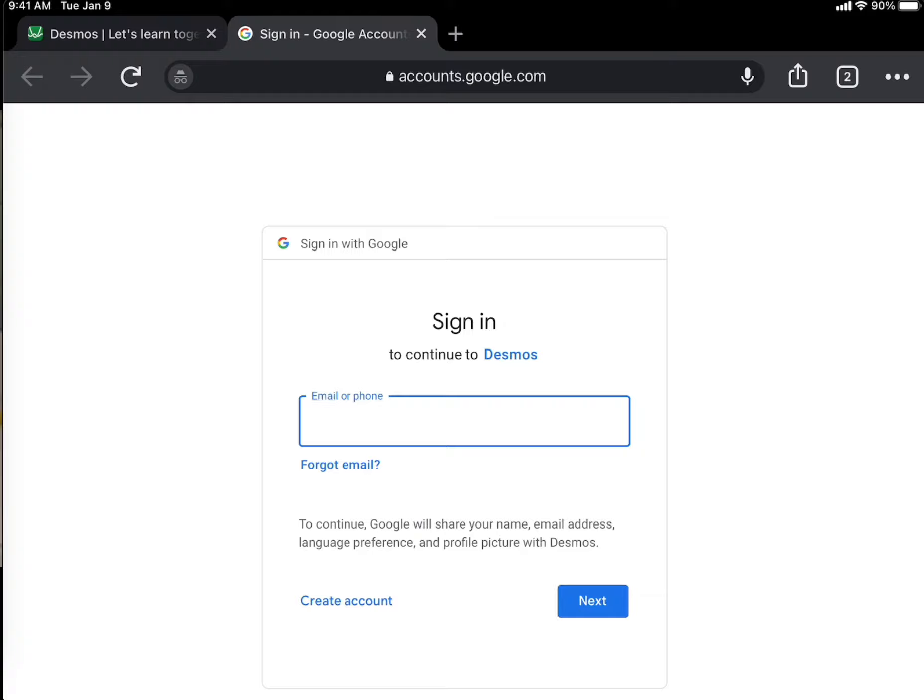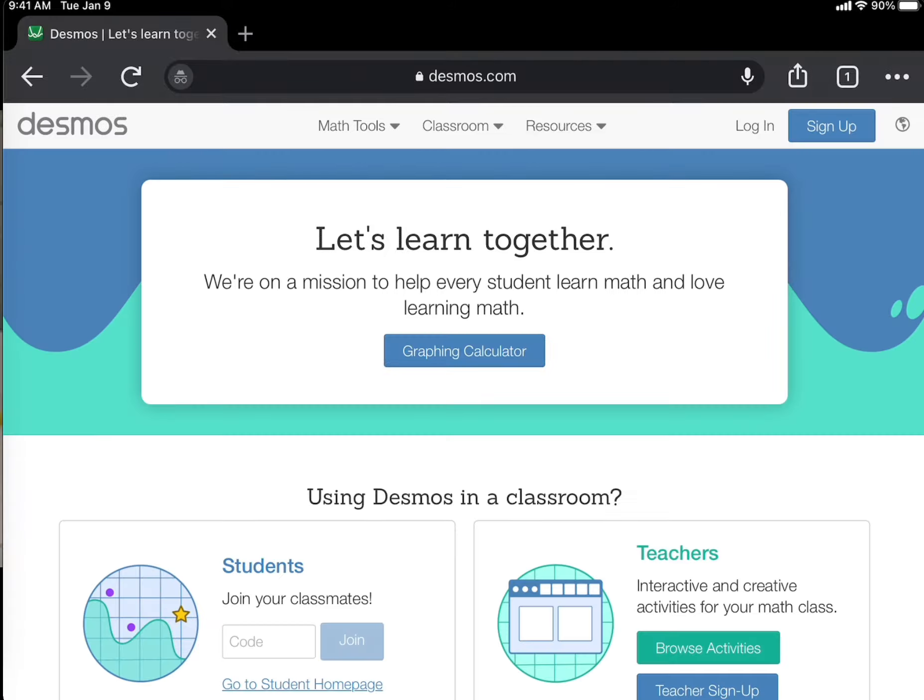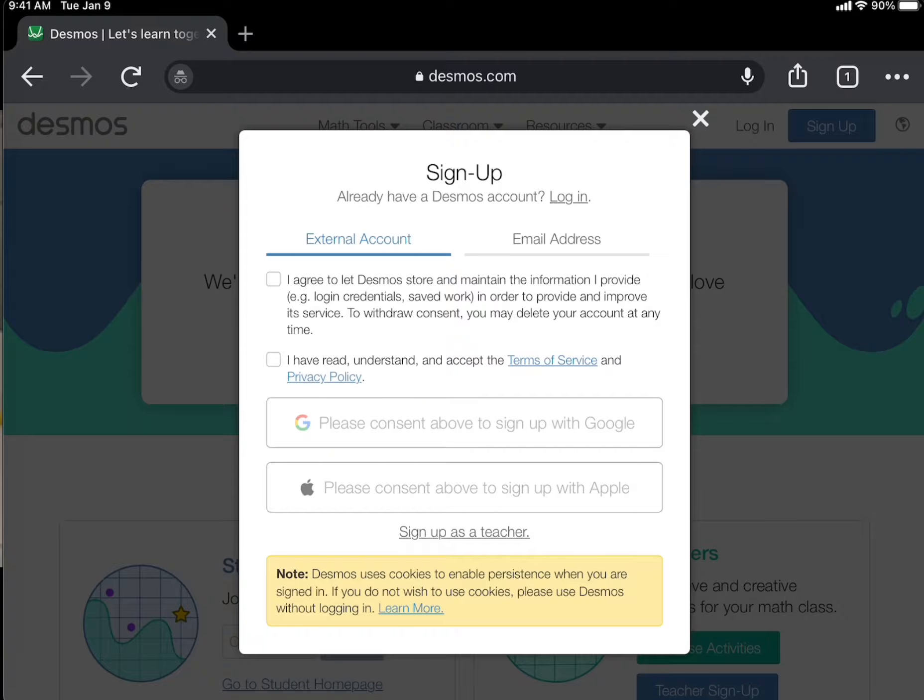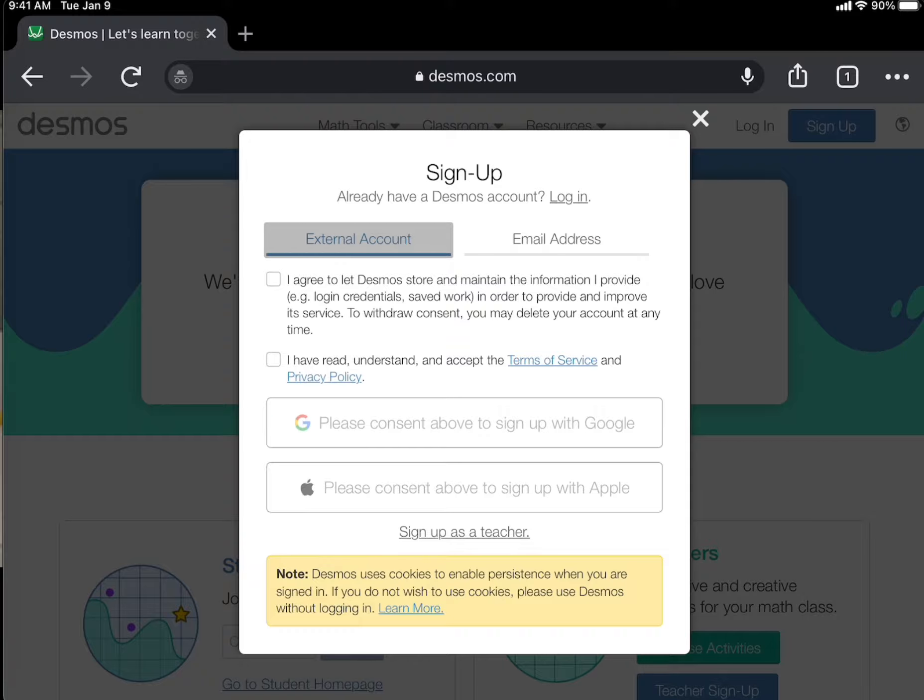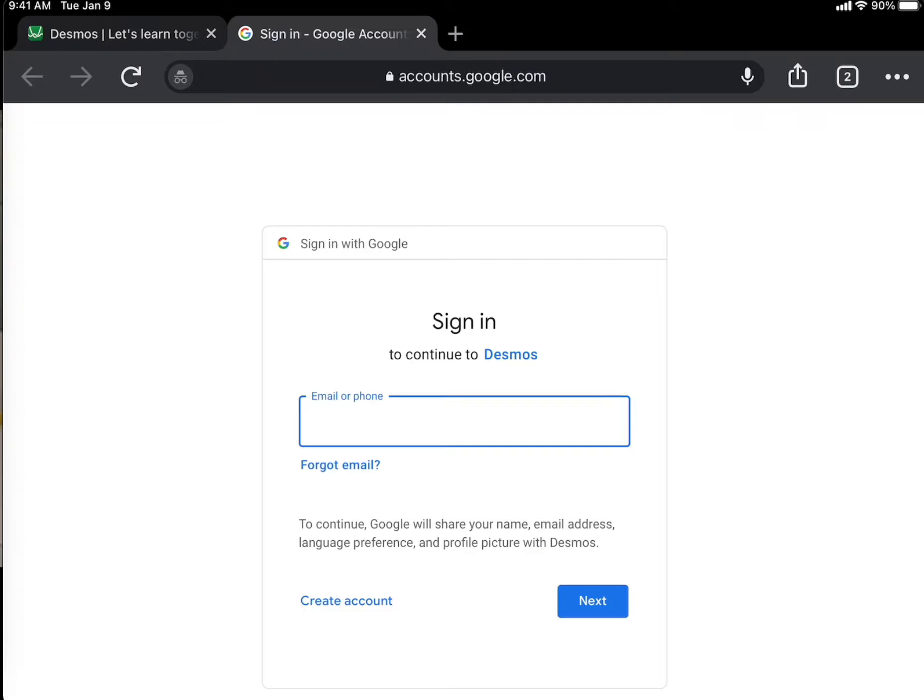And if you don't already have a Desmos account, I guess I could walk you through that super quick. Let me just do that before I forget. You would go to Desmos.com and tap on sign up. I link it to an external account. It's up to you whether you want to do that or if you want to create an account from scratch. If you do it with external, check the two boxes and then select the one that you're going to use the credentials from. So Google or Apple or whatever.